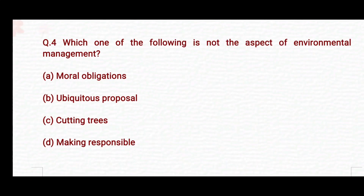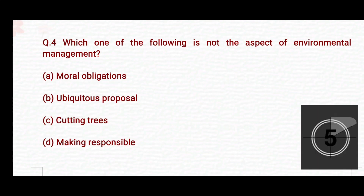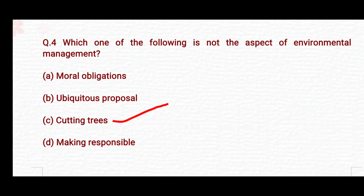Which one of the following is not the aspect of environmental management? Option A: moral obligations. Option B: ubiquitous proposal. Option C: cutting trees. Option D: making responsible. The right answer is Option C — cutting trees.